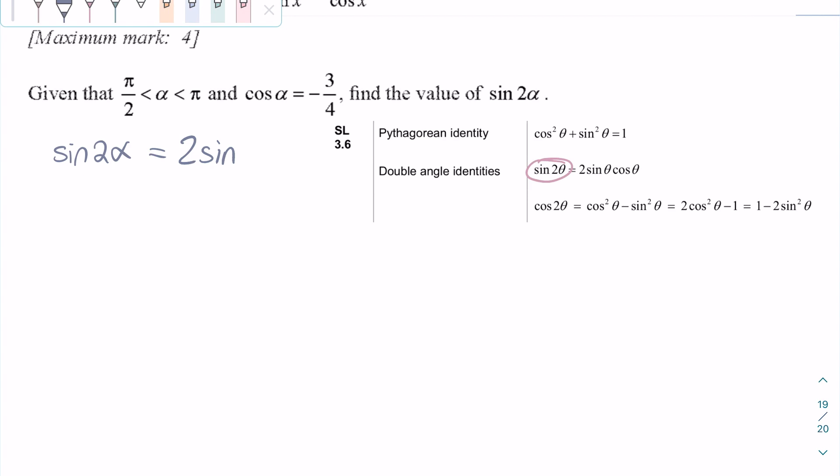So sine 2α can be rewritten as 2 sine alpha cosine alpha. This now makes it a lot easier to start rewriting sine 2 alpha in terms of numerical values.